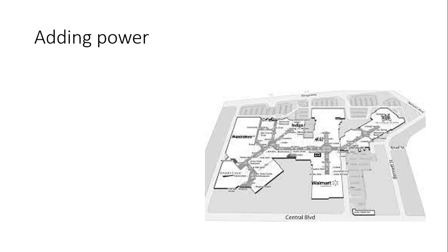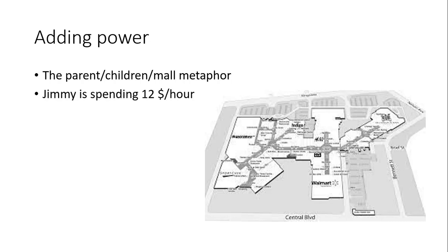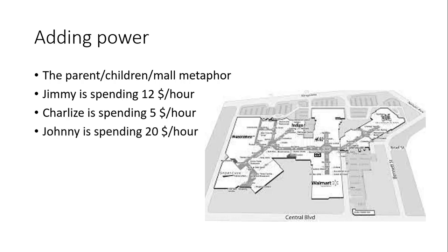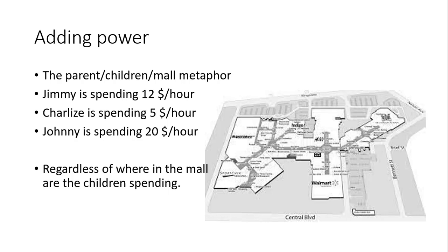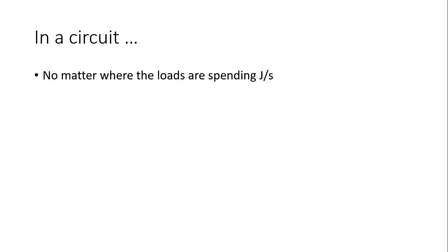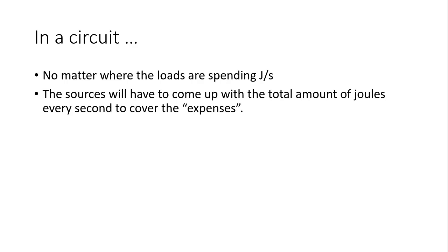We begin this exercise with a metaphor. In this metaphor, a mother takes her three children to a shopping mall. The youngest, Jimmy, goes his own way through the mall and is spending $12 an hour. The middle one, Charlize, is spending $5 every hour, and the eldest, Johnny, spends about $20 an hour. It doesn't matter where the children are spending their money — the end result is that the mother will end up paying $12 plus $5 plus $20, so she is spending $37 an hour.